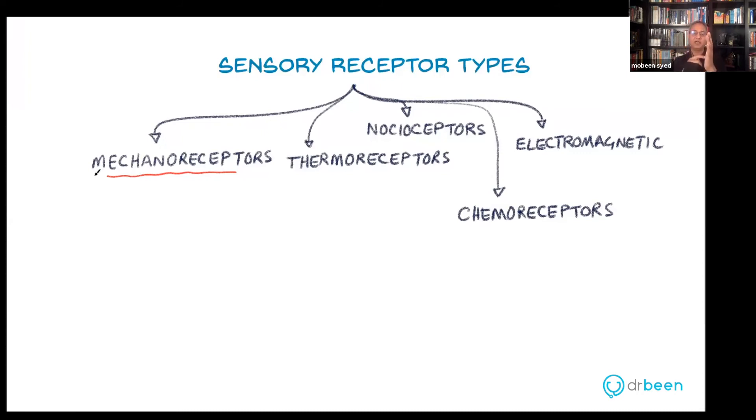These stimuli or the feelings that we have are called modalities. Modality simply means type of something. Any type of something is called a modality. Just like modals. So pain is a modality of sensation. Touch is another modality of sensation. And so on. So mechanoreceptors are responsible for touch. You would say mechanoreceptors are responsible to transduce the touch-related stimuli.